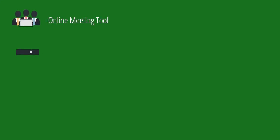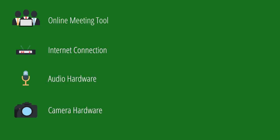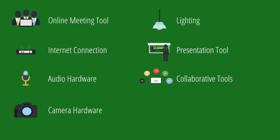Next, let's talk about the seven tools you need to be aware of and use correctly in order to do good online events. The seven tools are: your meeting tool or platform, your internet connection, your audio hardware, your camera hardware, lighting, your presentation tool, and collaborative tools. Let's quickly run through all of these seven tools to avoid the kind of painful online meeting or class experience that I'm sure you've been part of as well.